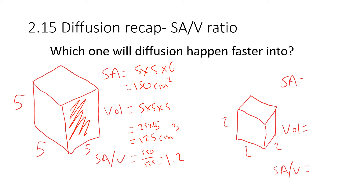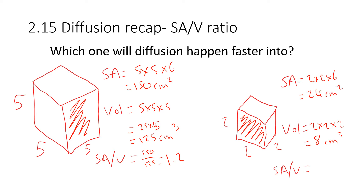For the other cube, the volume is 2 times 2 times 2 which is 8 cm cubed. The surface area is 2 times 2 for one face, times 6 faces: 4 times 6 is 24 cm squared. So the surface area to volume ratio is 24 divided by 8 which equals 3. As you can see, the smaller cube has a larger surface area to volume ratio, therefore diffusion happens quicker through it.